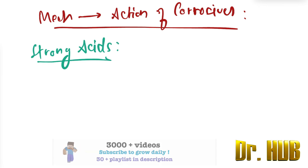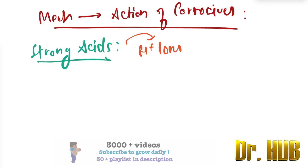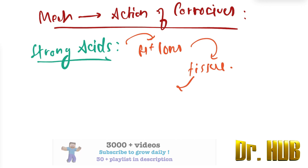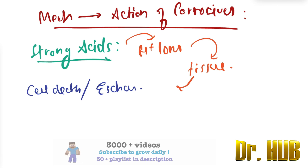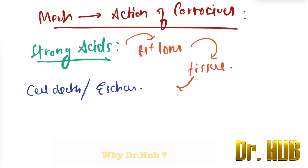The mechanism of action of strong acids involves hydrogen ions. These hydrogen ions penetrate the tissue and lead to cell death and eschar formation.